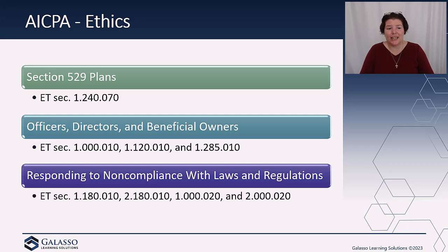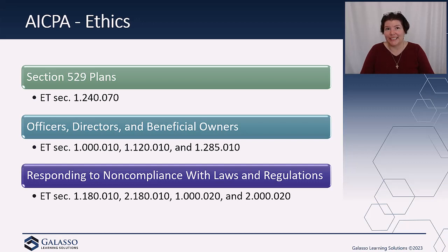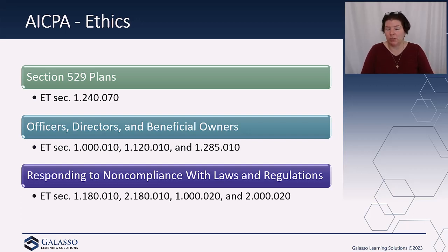From an ethics perspective, the AICPA got quite a bit out. They did a technical correction for 529 plans, changing some of the requirements around safeguards. They did a revised interpretation related to officers, directors, and beneficial owners — connected to what they were working on for loan transactions. They also issued a new interpretation related to non-compliance with laws and regulations, or NOCLAR, which helps address both the employee side if you are in business, and the public accounting side on what you can and cannot report from a non-compliance.